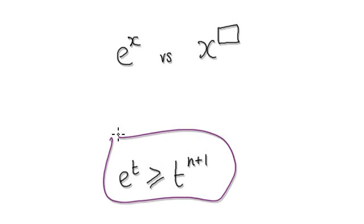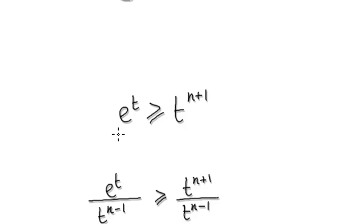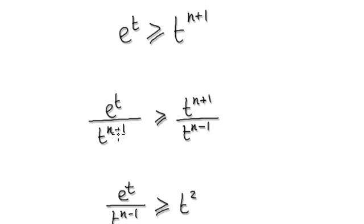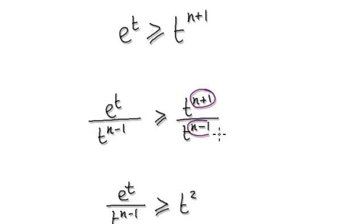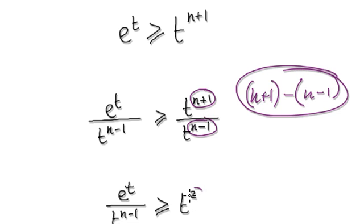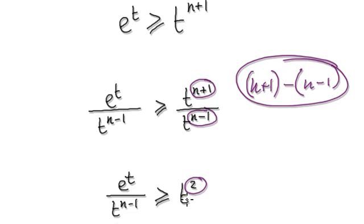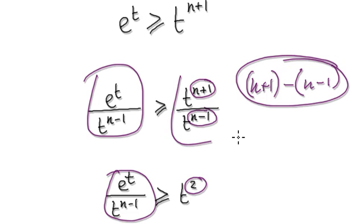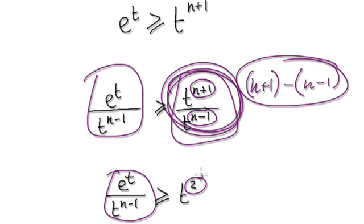Now that we're here, divide both sides by this. Tidy this up: you get n plus 1 take away n minus 1, so tidy this whole thing up — that gives you 2. So this thing here will become this, and then this whole thing here will become t squared.